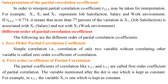Different orders of partial correlation coefficient: First, the zero-order partial correlation coefficient. Simple correlation — i.e., correlation of only two variables without controlling other variables — is called the zero-order coefficient of correlation.